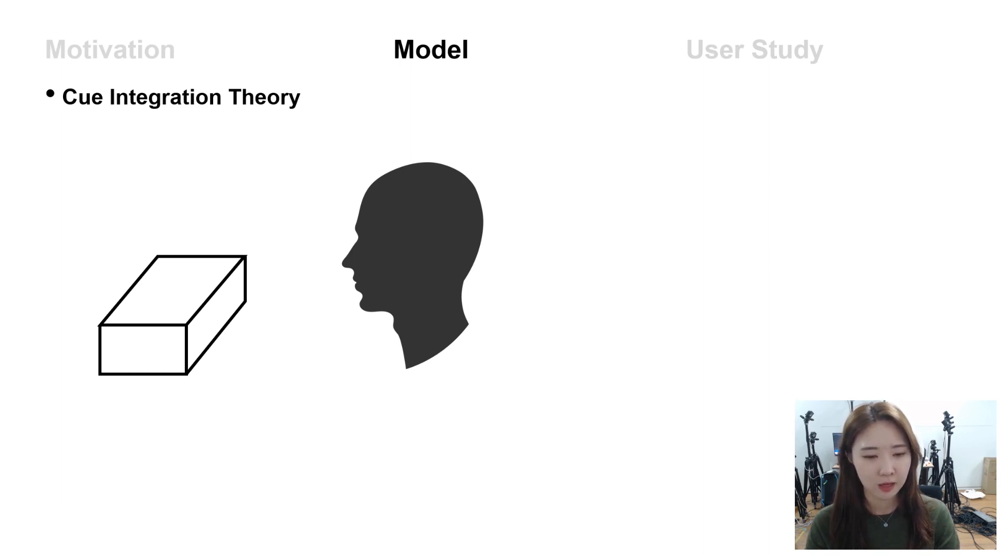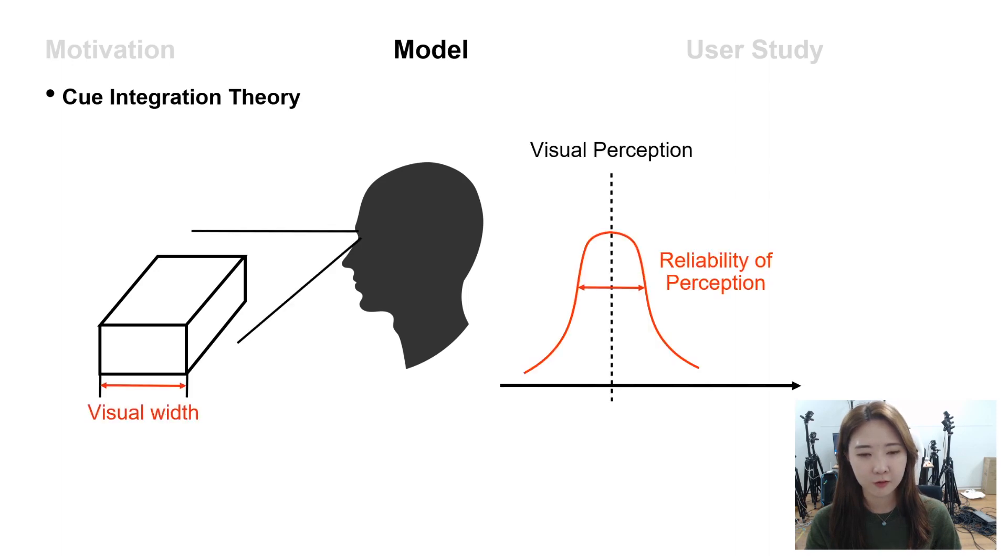For example, let's suppose a user is trying to estimate the size of the box. First, the user will see the box and estimate the width through the visual information. In this case, the width of the distribution represents the reliability of the perception.